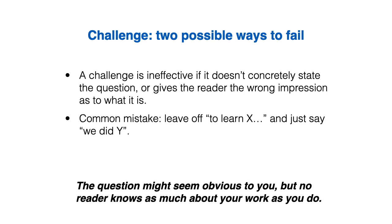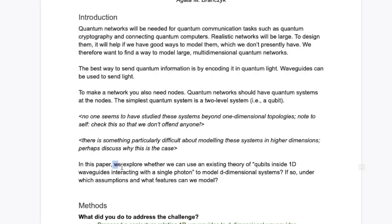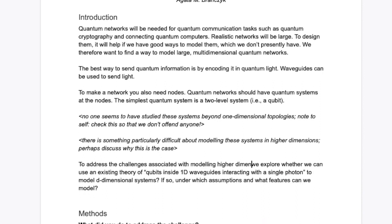So let's go back to our example and see how we did. We did a pretty good job at concretely stating the question. The question is, can we use an existing 1D theory to model higher dimensional systems? What about the second possible way to fail? Did we say why we were doing something? We could be a little bit more clear about it, so let's give it a little bit more context at the beginning of this paragraph.